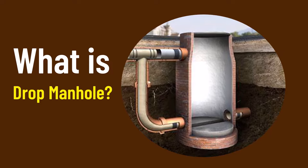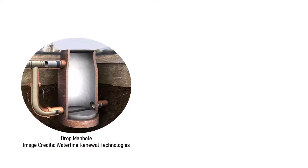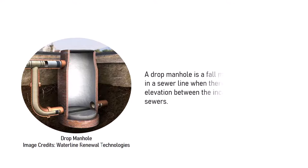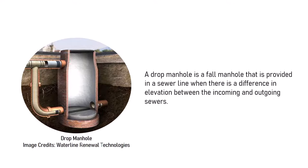A drop manhole is a fall manhole that is provided in a sewer line where there is a difference in elevation between the incoming and the outgoing sewer in a manhole unit. Manholes are located in a sewer line system wherever there is a change in the sewer geometry or where there is a change in the flow parameter.